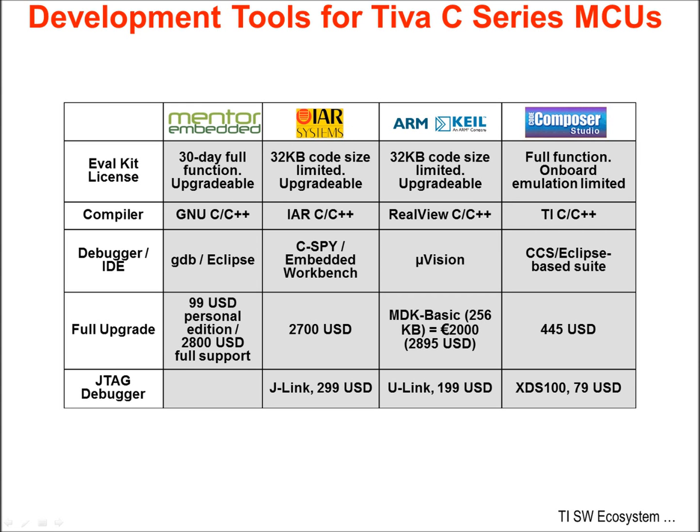TI's compiler has been developed in-house over many years. For the debugger and editor interface, two of the tools offer Eclipse support. Eclipse is an open source tool that's quite popular, primarily because of the many third-party tools available as add-ins. The prices for upgrading to the full versions are shown on the chart. Code Composer Studio is $445 USD for the downloaded version, or $495 USD for the CD. Most of the companies offer JTAG debuggers, and there are also quite a few third-party debuggers for sale.